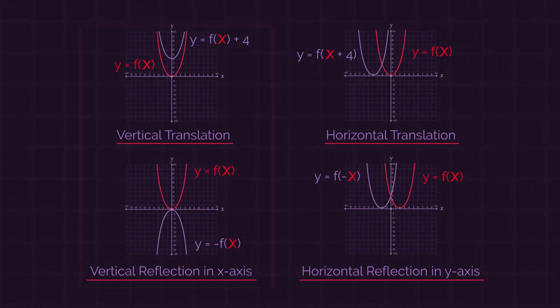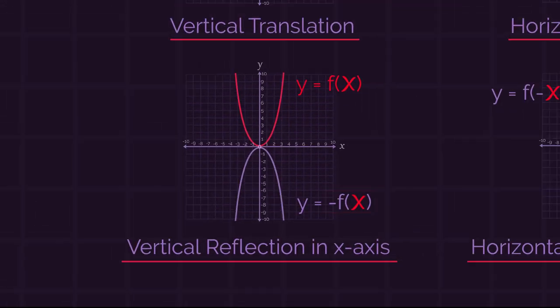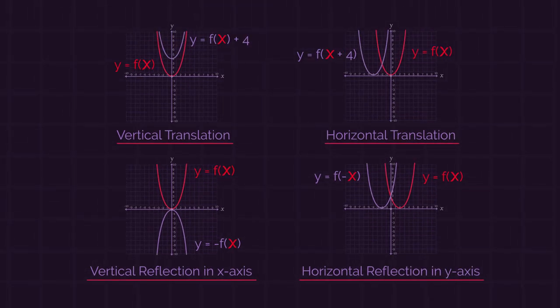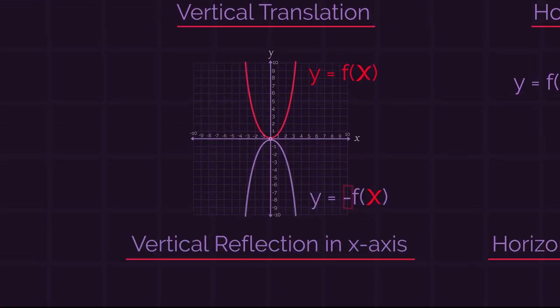Notice how for the vertical transformations, we apply the numbers or negative to the outside of the x, so it applies to the whole function. So the plus four, and to reflect, the negative goes outside and multiplies by the whole function.